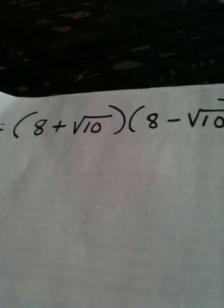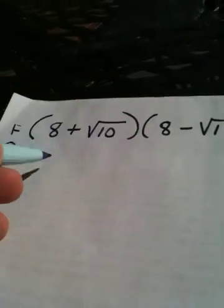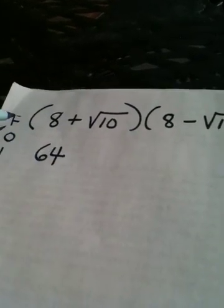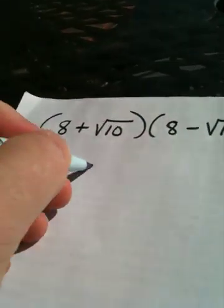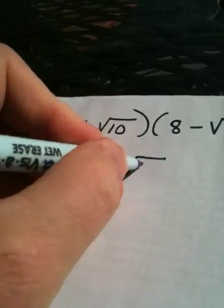So first is 8 times 8, which is 64. Outer: 8 times negative root 10 is negative 8 root 10.